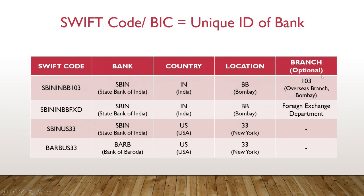So SBIN stands for State Bank of India, IN is for the country India, BB is the location of the headquarters of SBI — that is the erstwhile Bombay — and 103 is the code for that particular branch. It can either be numbers or letters. This other code shown is the foreign exchange department of SBI, and this one is SBI but in the USA, where 33 is the location code for New York.